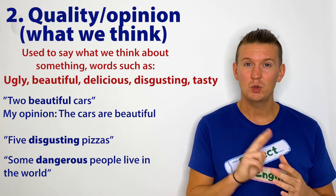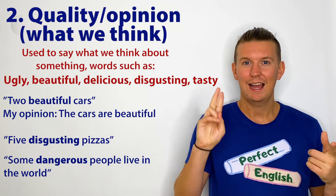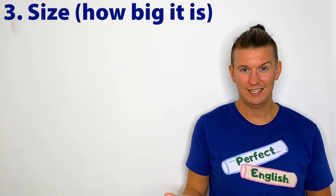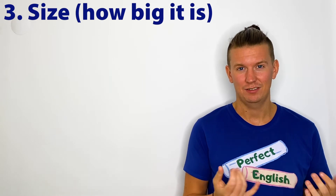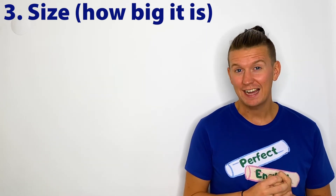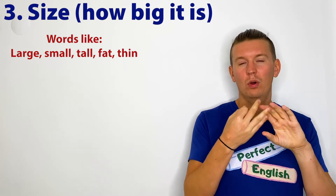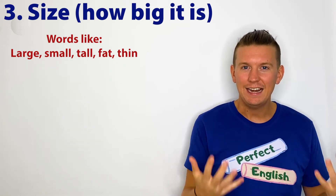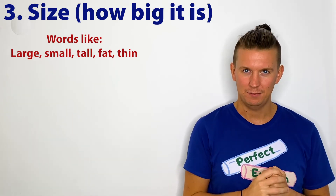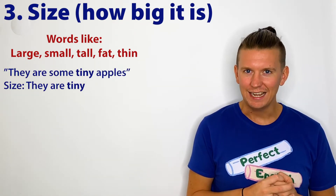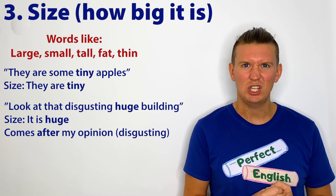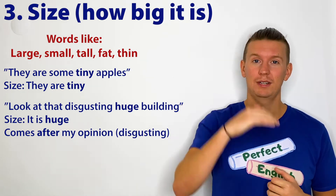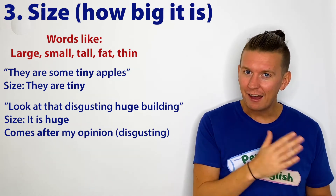The first two adjectives in order are quantity and quality — how many, and our opinion. And then we have size. Size tells you how big or small something is, and comes third in the list. Some examples of size adjectives: large, small, tall, fat, thin — anything describing the size of something. For example: 'There are some tiny apples' — tiny describes the size. 'Look at that disgusting huge building' — huge describes the size, and it comes after my opinion.